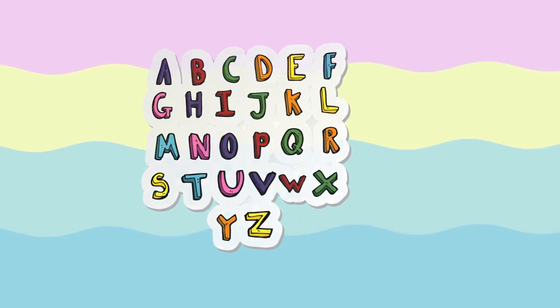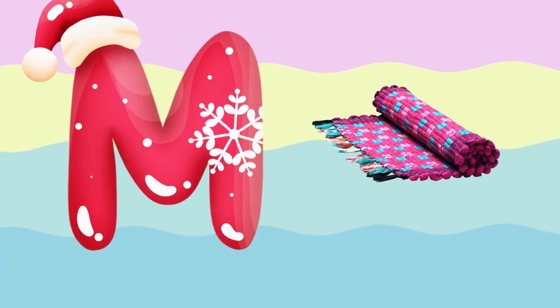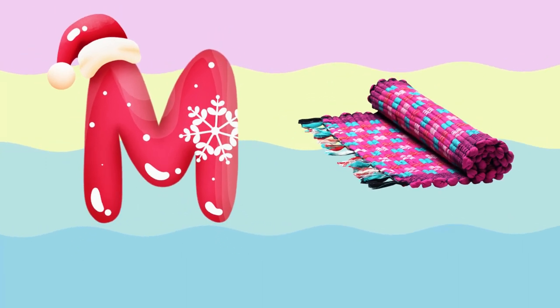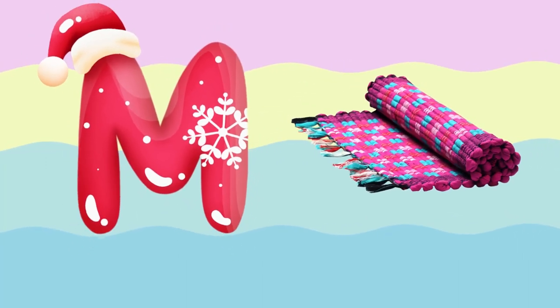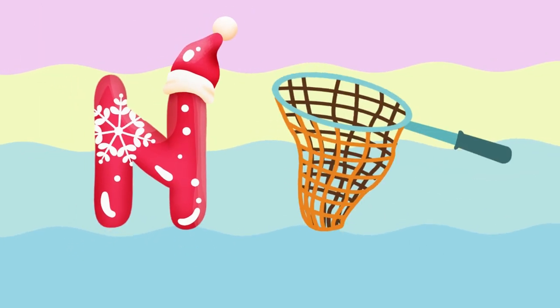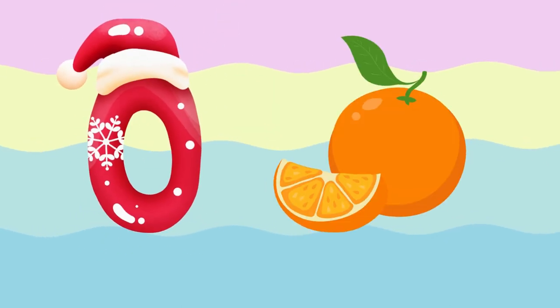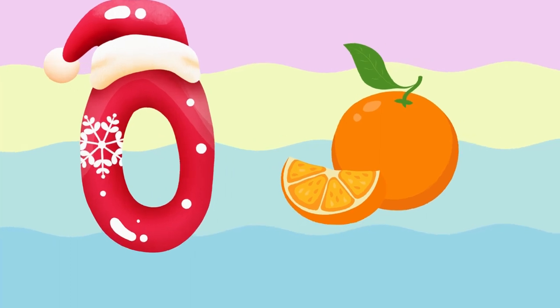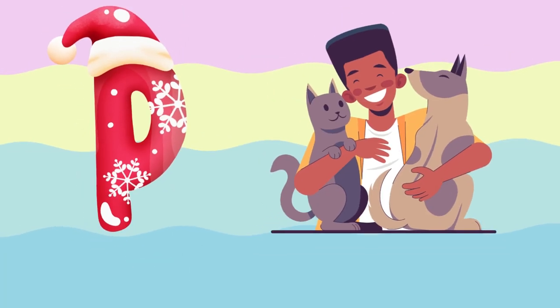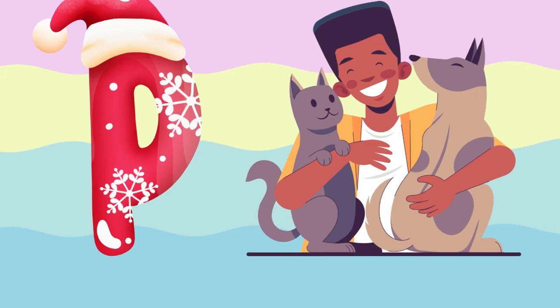M is for mat, m-m-mat. N is for net, n-n-net. O is for orange, o-o-orange. P is for pet, p-p-pet.